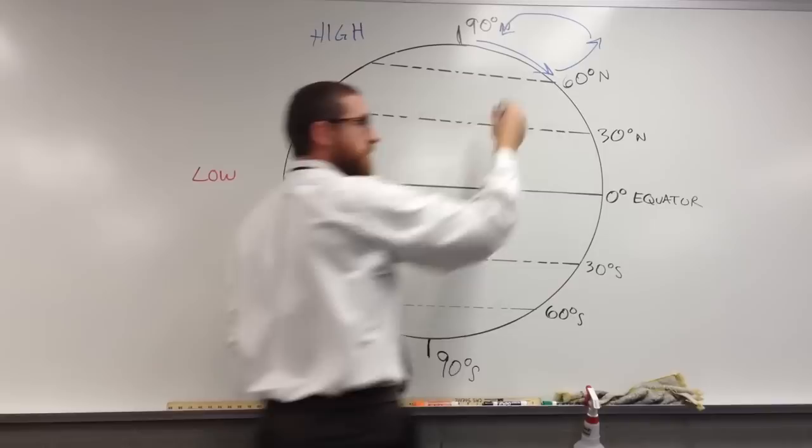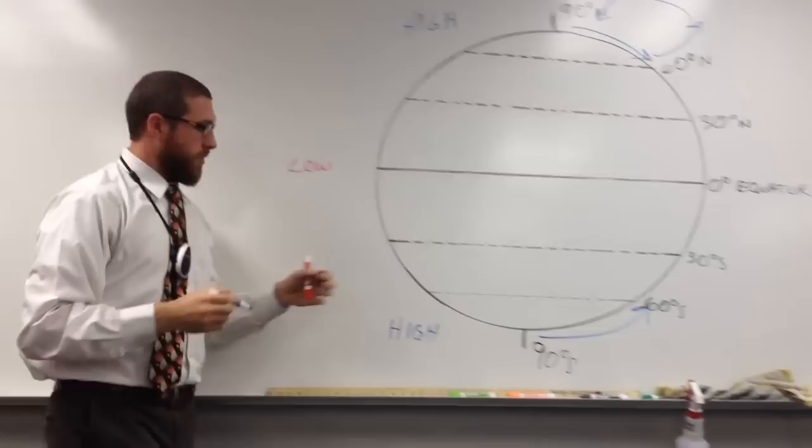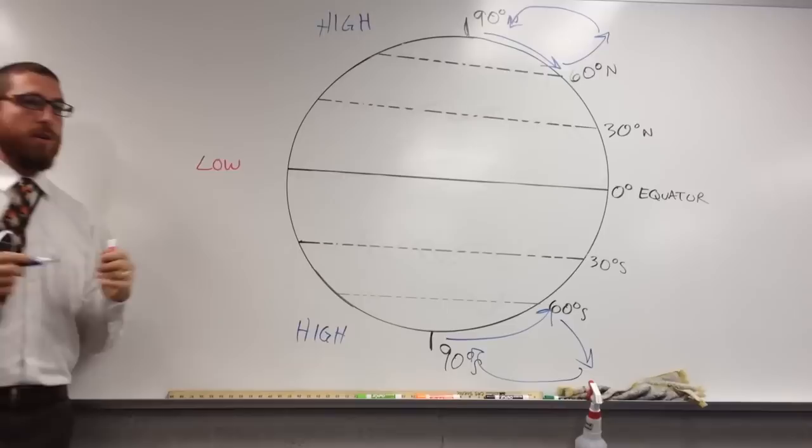The exact same thing happens at the South Pole. The wind starts to blow northward — going from high to low. But it heats up at 60 degrees south, rises off the earth, cycles back, and forms a convection current.